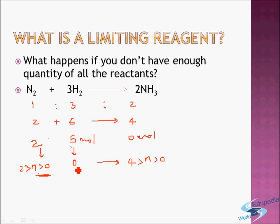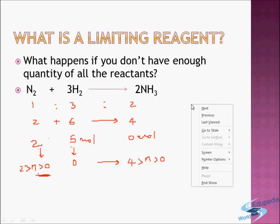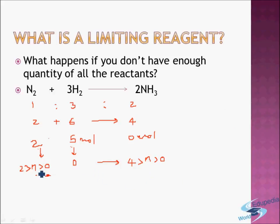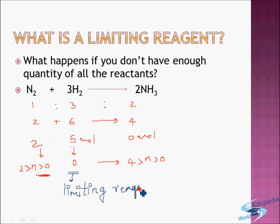The hydrogen got over, so nitrogen could not react — hydrogen limited the amount of nitrogen which could react. Similarly, since hydrogen was finished, ammonia could not be formed any further — formation of ammonia requires hydrogen, so hydrogen also limited the formation of ammonia. Being in lesser quantity than required, hydrogen is the limiting reagent. A reagent is any substance used in your reaction.